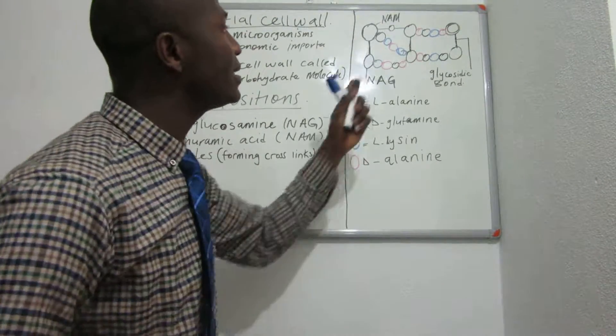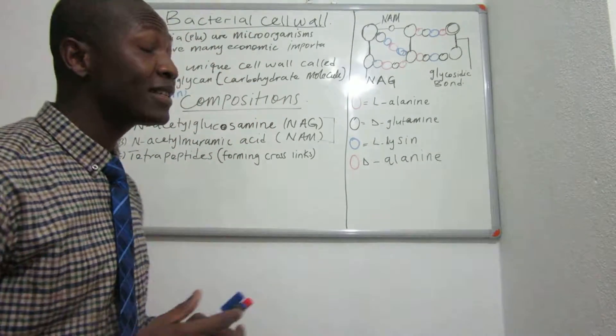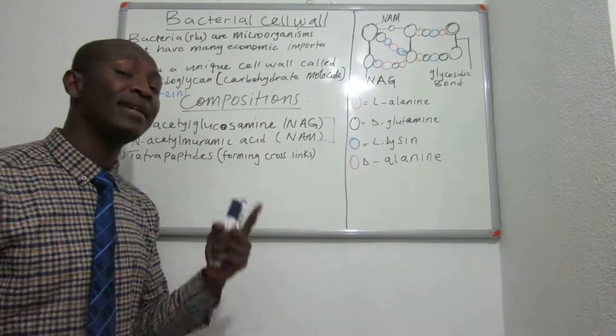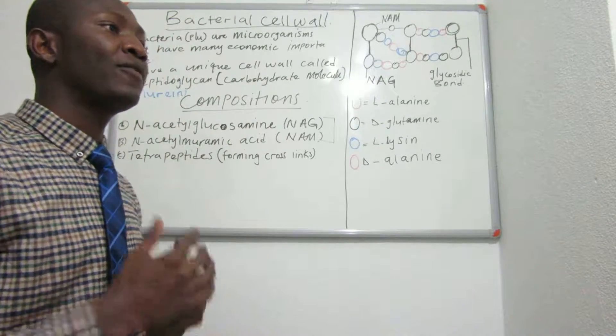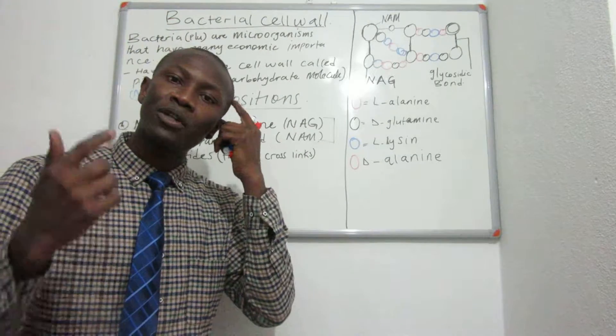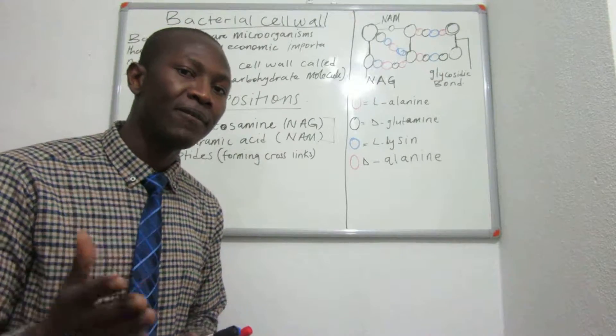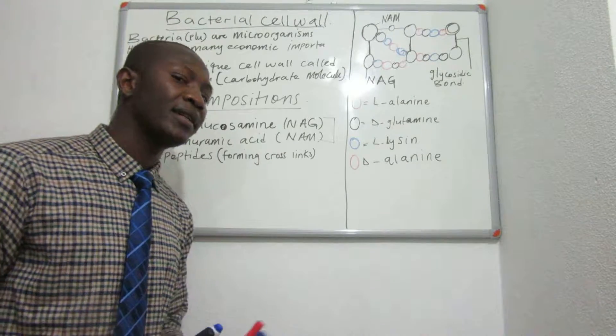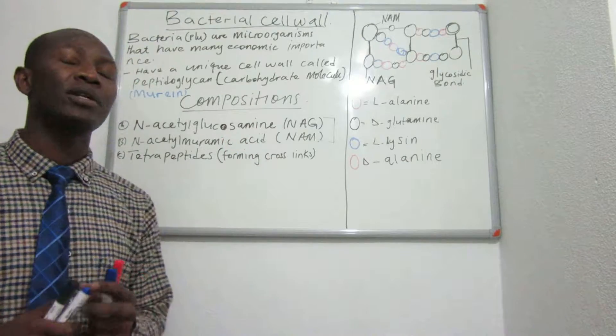However, it should be understood that the cell wall structure, the peptidoglycan layer of the bacteria, is different from gram-positive bacteria to gram-negative bacteria. Their cell wall structures are different. We are going to look at the differences between the structures of the cell wall in gram-negative and gram-positive bacteria in our lecture coming.